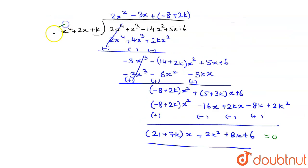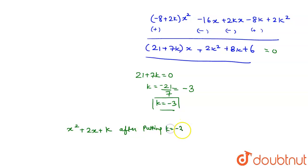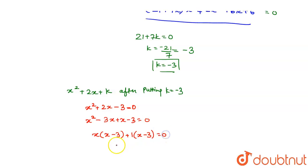Now substituting k = -3 into g(x): x² + 2x + (-3) = x² + 2x - 3. Splitting the middle term: x² - 3x + x - 3 = 0, which factors as x(x - 3) + 1(x - 3) = 0, giving factors (x + 1) and (x - 3).